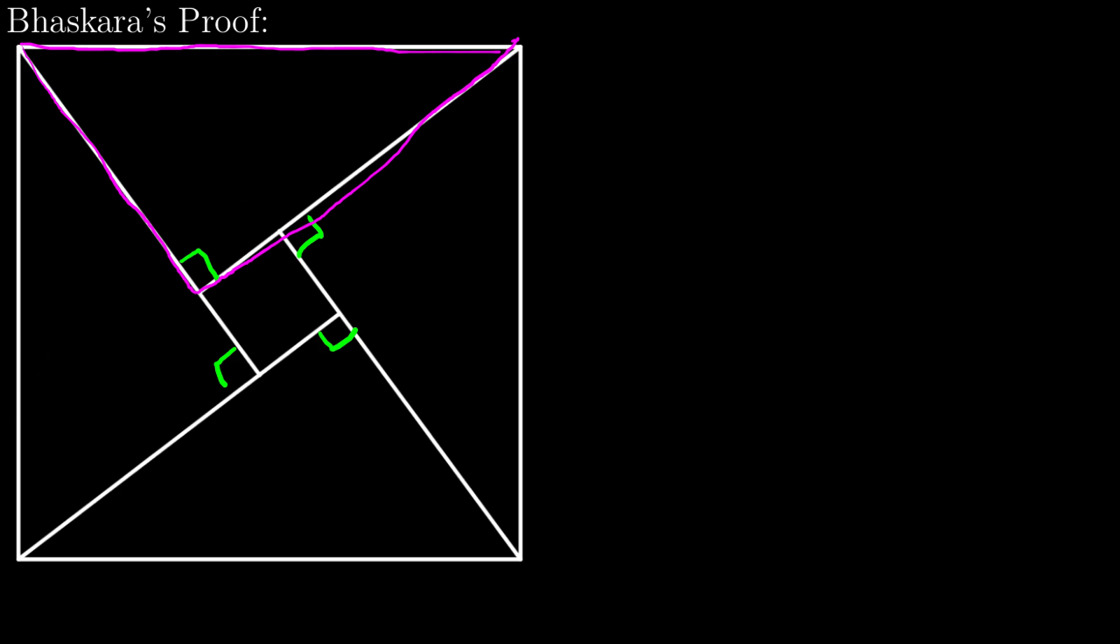I have one large square made up of four triangles and one small square. So I want to prove that in a right triangle with legs a, b and hypotenuse c, a squared plus b squared equals c squared.